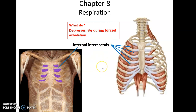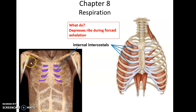We also have the internal intercostals. They are also between the ribs, but in the opposite orientation. What they do is depress the ribs during forced exhalation. If you want to breathe out really quickly, you would contract your internal intercostal muscles, depressing the rib cage, compressing the lungs, and forcing the air out faster.